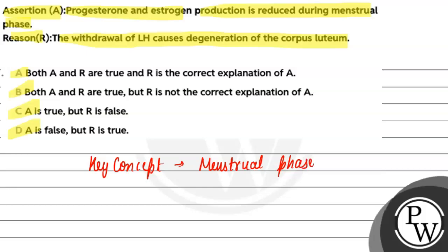One by one, we discuss both statements here. During the menstrual phase, both progesterone and estrogen are produced. However, progesterone and estrogen production — estrogen production in particular — is decreased or reduced.